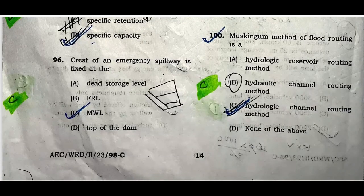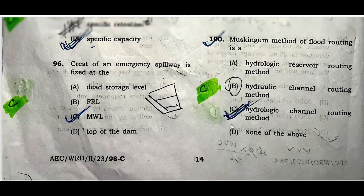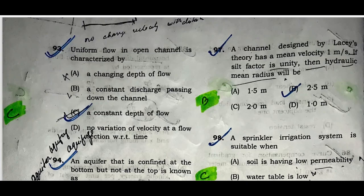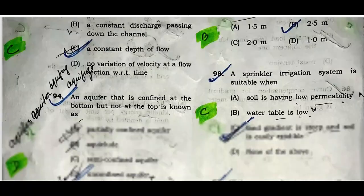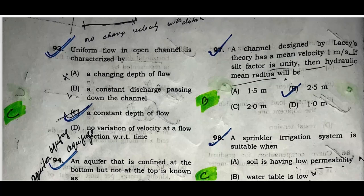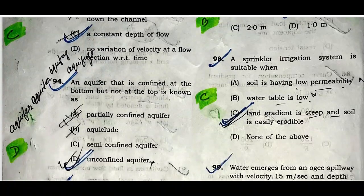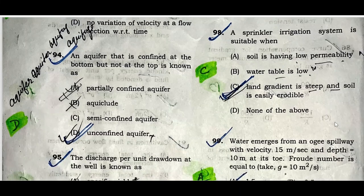Question ninety-six: The crest of an ogee spillway is fixed at the MWL. Option C is correct. Question ninety-seven: A canal designed by Lacey's theory has a mean velocity of 1 meter per second. If the silt factor is unity, the hydraulic mean radius is 2.5 meters. Question ninety-eight: A sprinkler irrigation system is suitable when the land gradient is steep and the soil is easily erodible. Option C is correct.